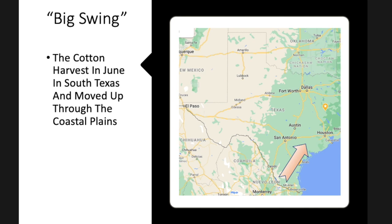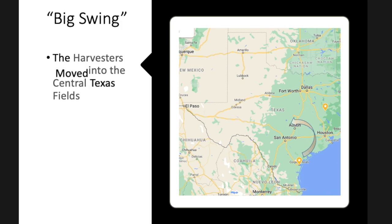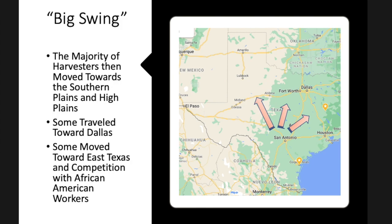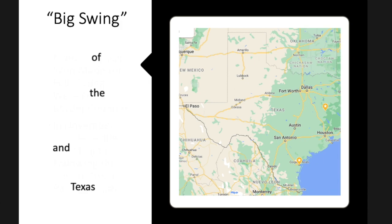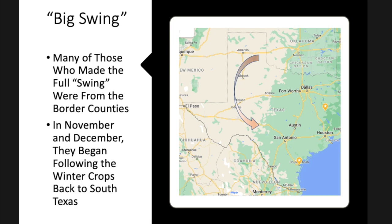The Big Swing started around June in South Texas, moved up along the coastal plains, and then swung back toward Central Texas. After a few weeks — about six weeks in each area — the majority of harvesters went toward the High Plains or toward Dallas and North Texas. Some moved into East Texas, but there they faced competition with African American farm laborers. By December, many who made the full swing were headed back down toward the border regions, following the winter crops. This tells us there were crops grown year-round in Texas, allowing these workers to make this migration throughout the state.